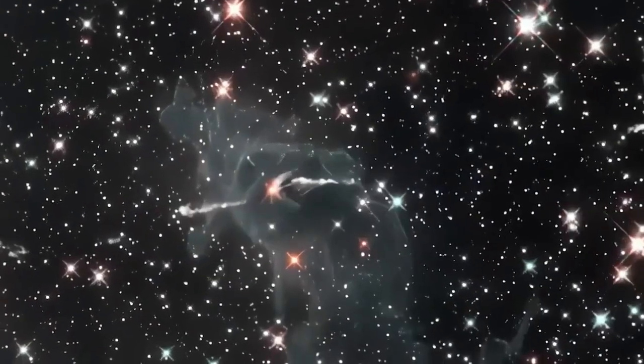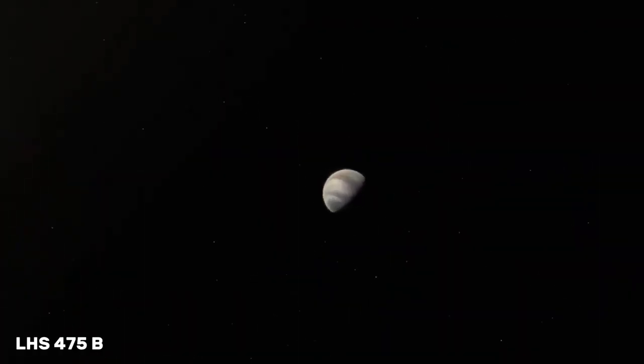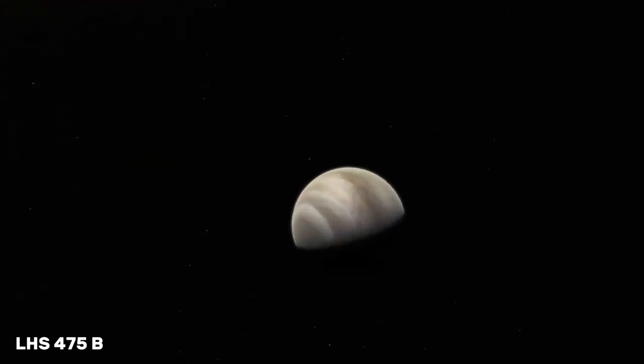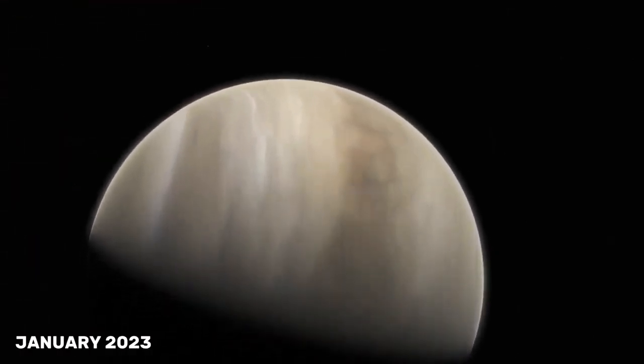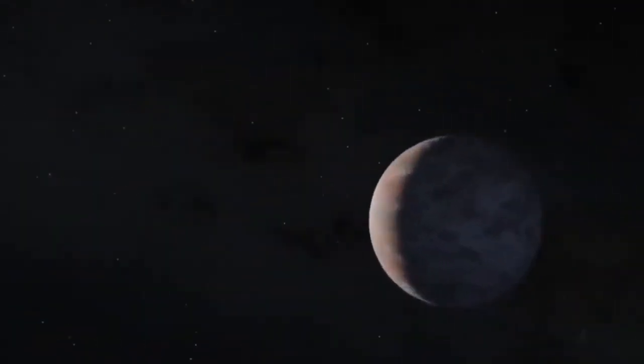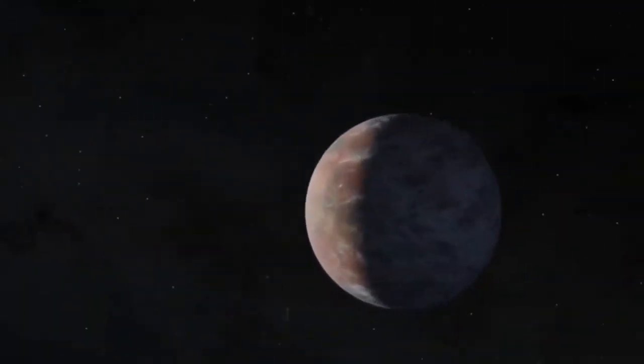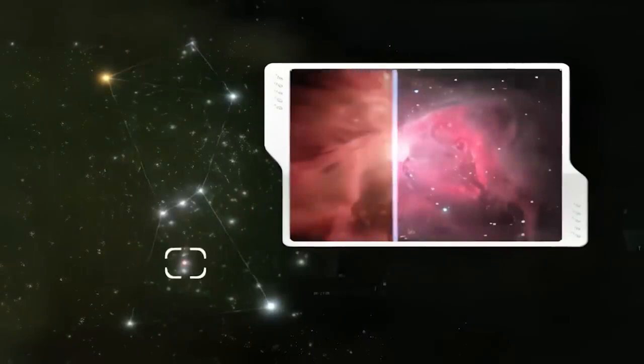Apart from that, Webb also discovered its first exoplanet. The planet, known as LHS 475 b, was caught by the telescope's near-infrared spectrograph in January 2023. The planet is nearly identical in size to Earth and a few hundred degrees warmer. The near-infrared spectrograph was also used to generate a transmission spectrum in order to study the exoplanet's molecule range.